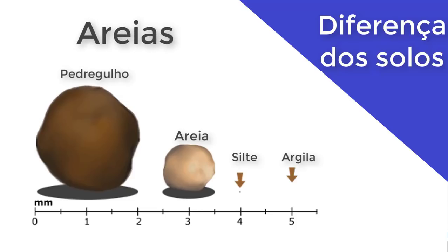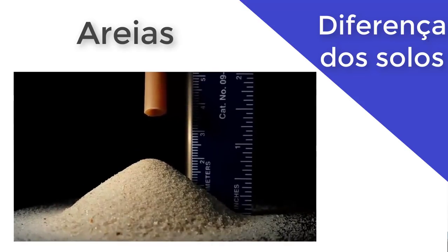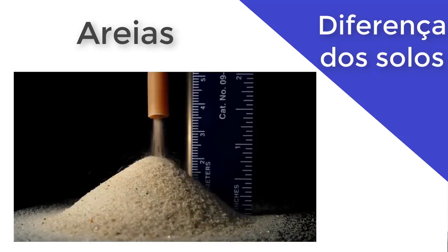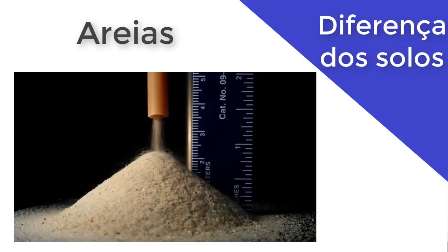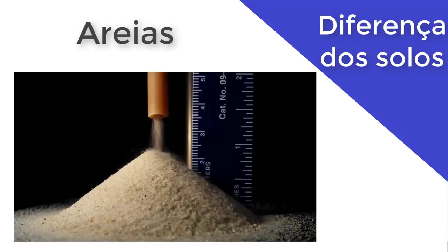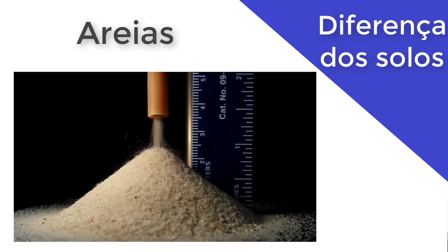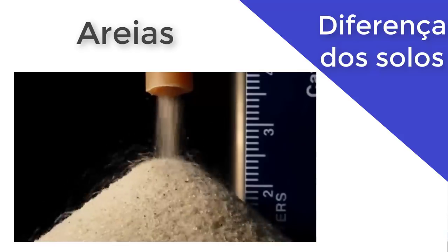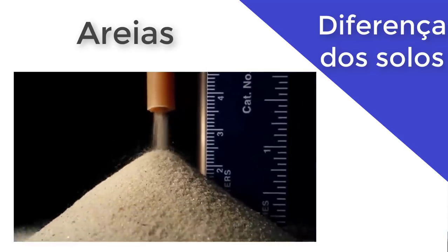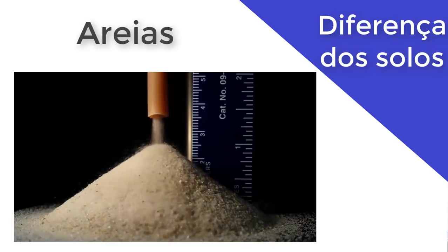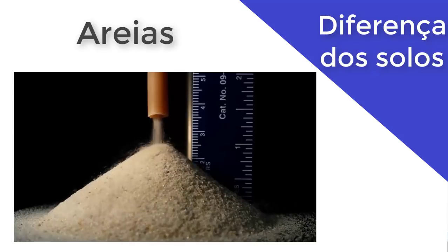As particularidades do solo arenoso é justamente ele não sofrer a ligação atômica como a argila. Então, ele precisa de outras artimanhas entre as partículas para que se mantenha a estabilidade do solo. Quando a areia não está confinada — por exemplo, quando você pega um monte de areia seca na mão — o que vai acontecer? Ela vai escorrer por entre os seus dedos. Os grãos da areia vão escorrer, diferente da argila ou de um solo argiloso.